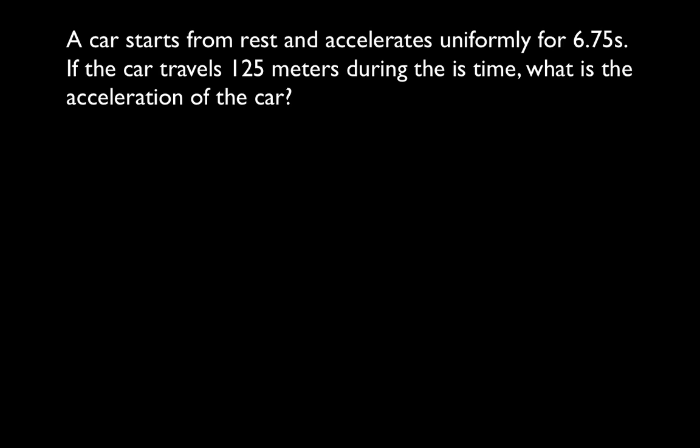A car starts from rest and accelerates uniformly for 6.75 seconds. Over that time it travels 125 meters, and we want to know what the acceleration of the car would have to be to achieve that. Once again, write down all five of your kinematic variables: initial velocity, final velocity, change in position, acceleration, and time.